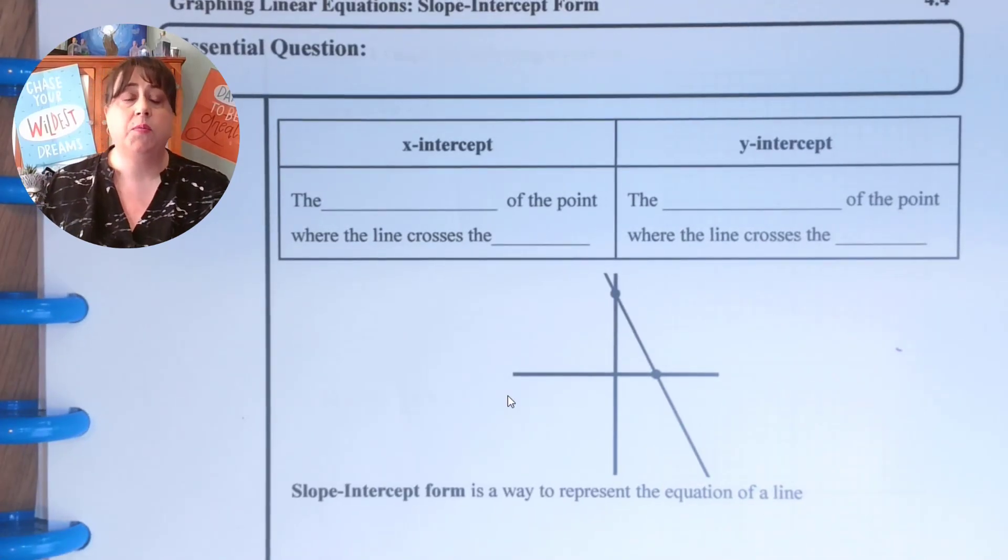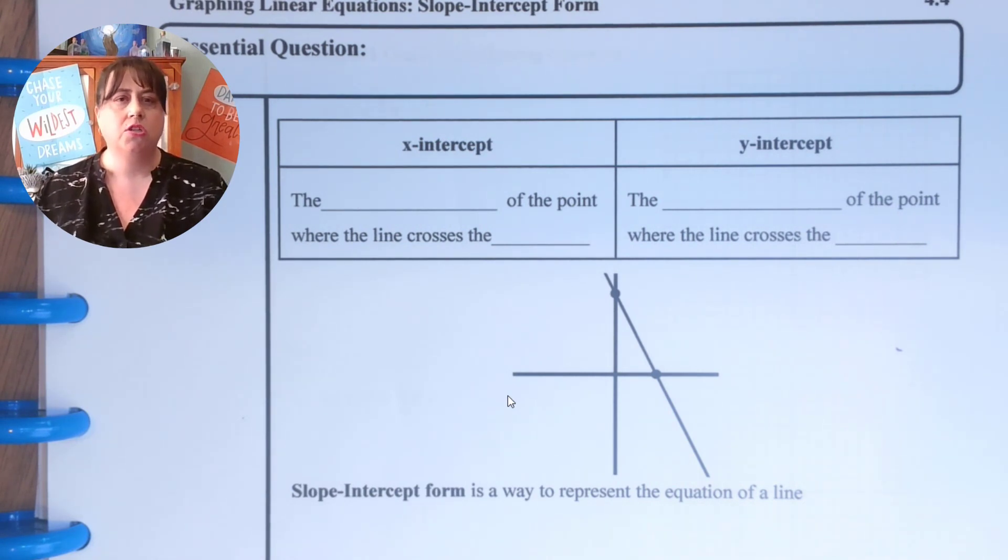So after today's lesson you should be able to write your own essential question based on the information that we've been going through. Remember your essential question should be able to be answered by the notes that we took. So I think you have the ability to do that and remember what we are doing today is we are graphing an equation using slope-intercept form.